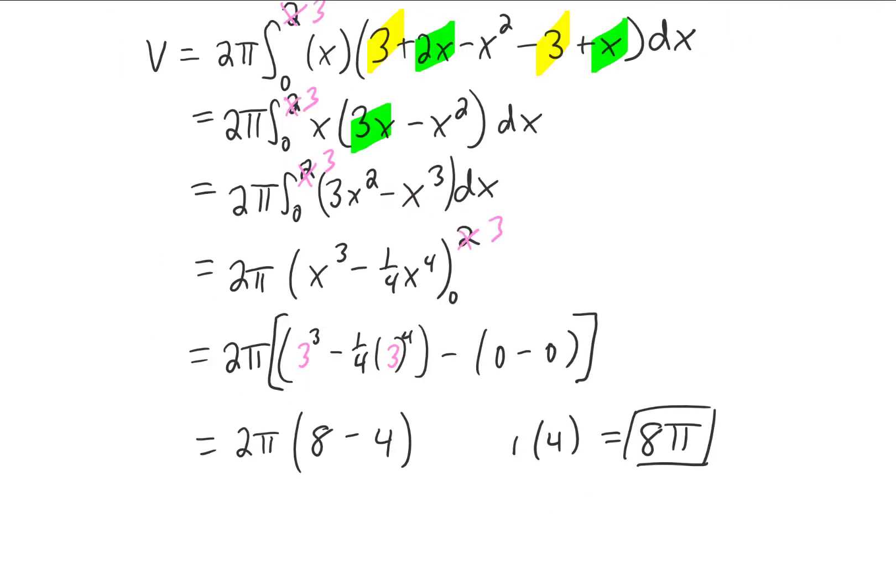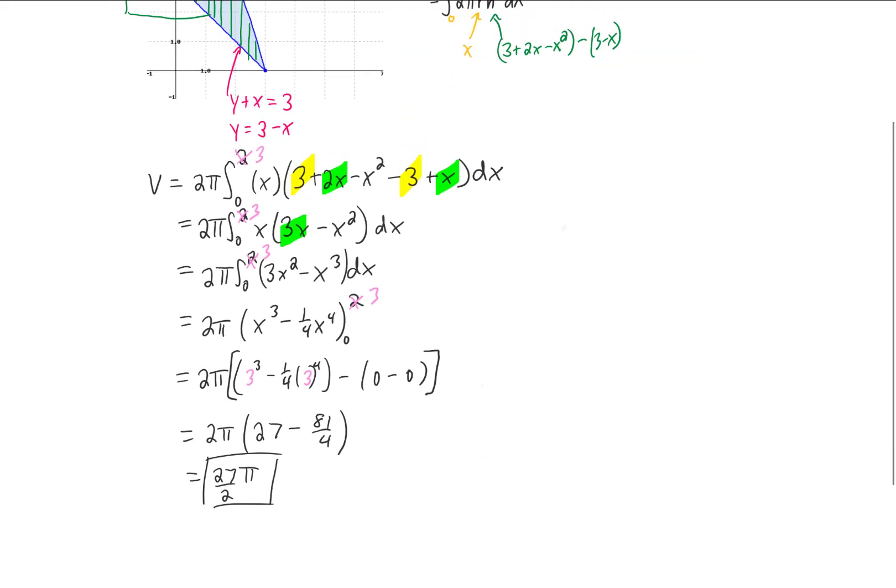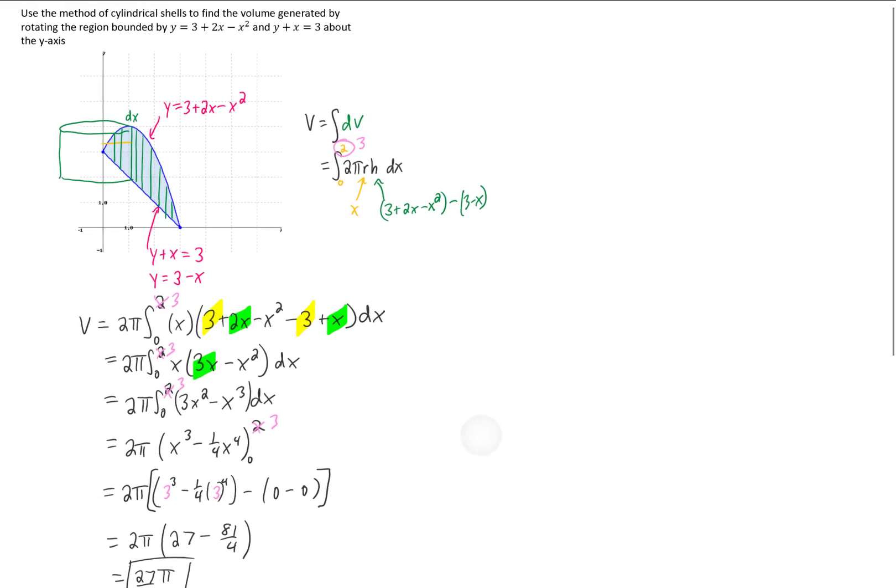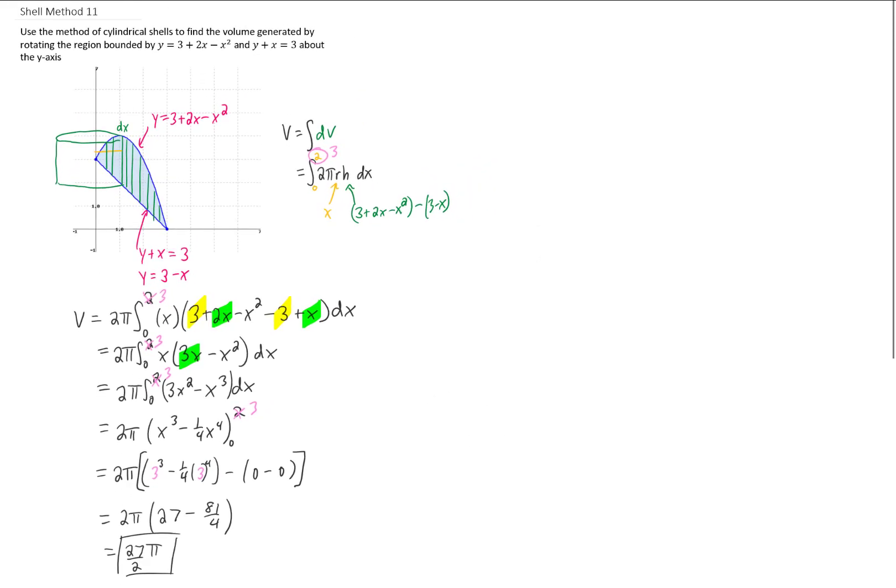I apologize for the goof up. 3³ is 27, 3⁴ is 81. Subtracting these two and multiplying by 2π gives us 27π/2, which is a much better and much more correct answer. So sorry about that. Hopefully that 0 to 2 limits of integration thing didn't confuse you too much, and you got to the end where you saw the fix.